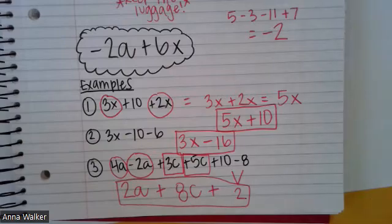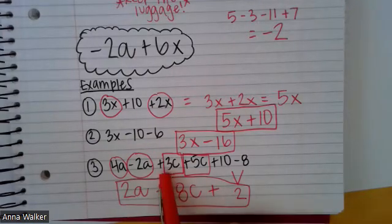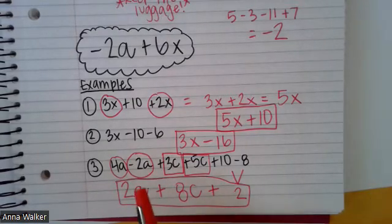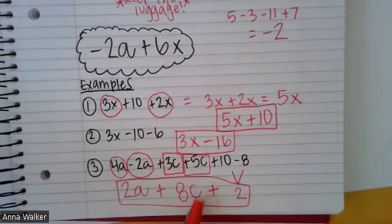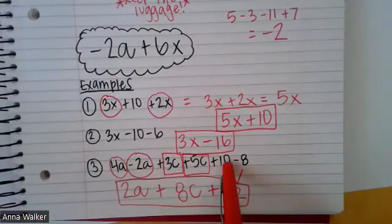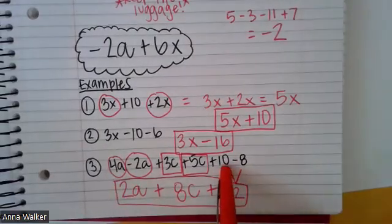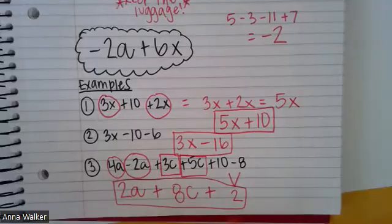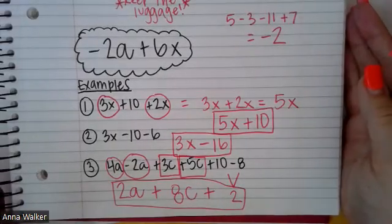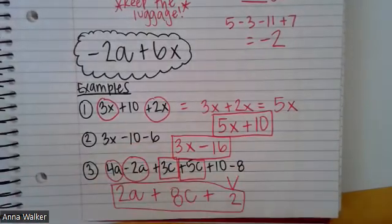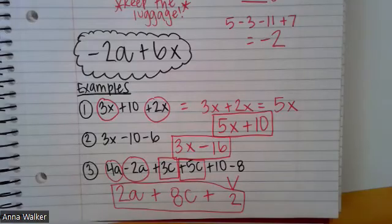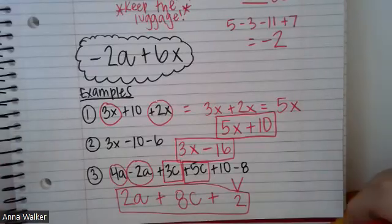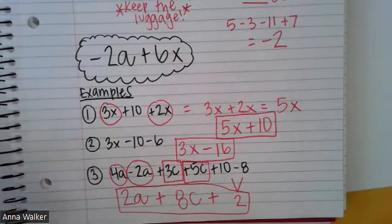When we combine like terms, it's really important to make sure the luggage is attached, the signs are attached to the terms. It's also really important to circle or highlight what are the like terms. I cannot combine 4A and 10 because they are not like terms. There's no A attached to 10, so I can't combine it with 4A. I can only combine like terms because the terms have the same variable, or if they're just numbers on their own with no variable attached to them. I would highly encourage you to understand these examples, and then try these practice questions.